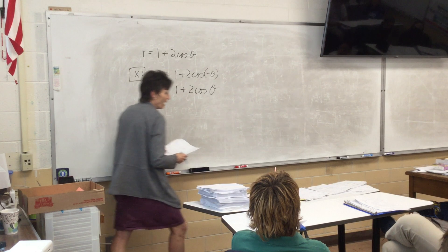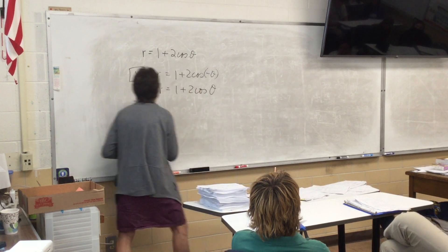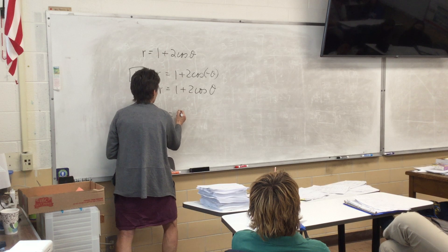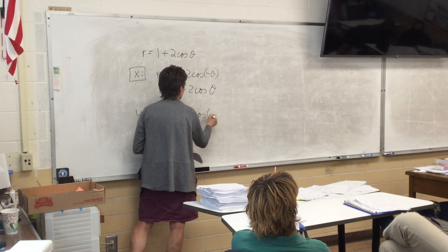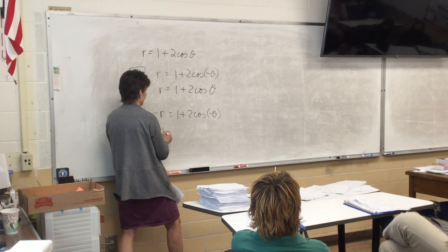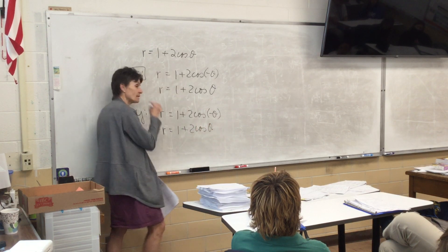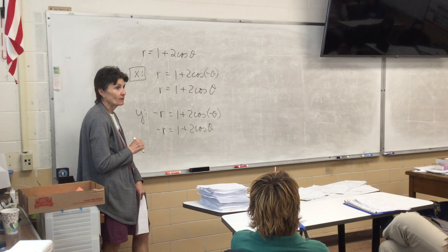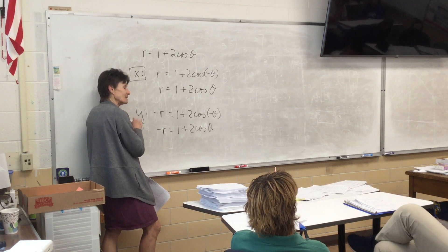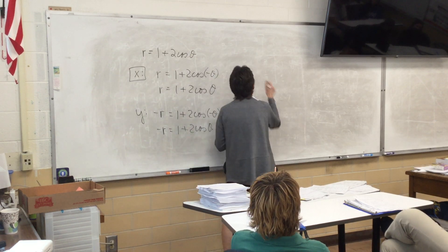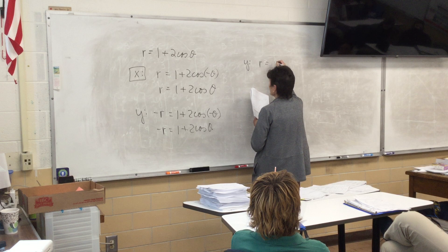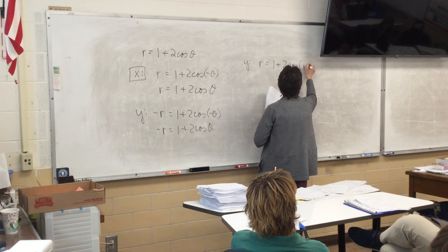Now I also need y-axis and origin. The y-axis test tells me to put in a negative r and a negative theta. This is not going to come out the same, because we just talked about what happens to that negative — when you take the cosine of a negative, it disappears; cosine is an even function. Is that equation the same as the original? No. But that doesn't mean I don't have symmetry — it just means I have to try the other test for the y-axis, which says leave r alone but replace theta with pi minus theta.